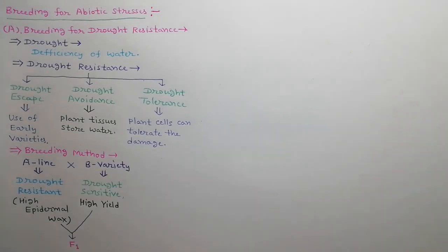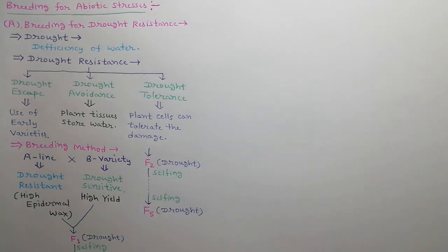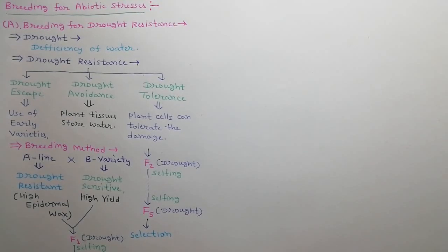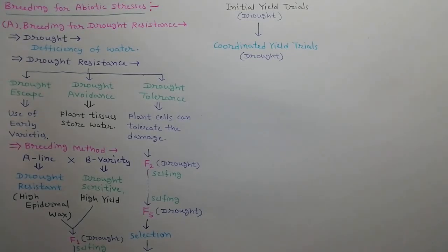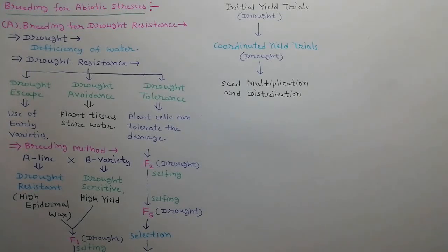We cross it with a high yield but drought sensitive variety, and as a result an F1 hybrid is obtained. Selfing is done in drought conditions up to F5 generation. Superior plants with high epidermal wax on leaves are selected under moist conditions. Initial yield trials are performed in drought conditions, followed by coordinated yield trials in drought conditions. Seeds are then multiplied in irrigated conditions and distributed to farmers.